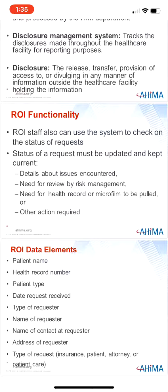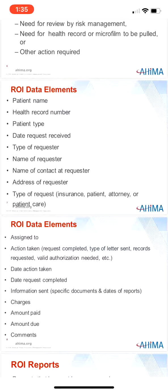Based on the number of copies and other activities, the ROI staff would record any charges applied. Starting on page 88, we're talking about common data elements found in an ROI system: patient name, health record number, patient type, date request received, type of requester, name of the requester, name of the contact at the requester, address of the requester, type of request, who it was assigned to, actions taken, date the action was taken, date the request was completed, what information was sent, charges, amount paid, amount due, and any comments. Basic patient information such as name and health record number are frequently populated via an interface from the admission, discharge, or transfer information system, eliminating the need to re-enter this information.